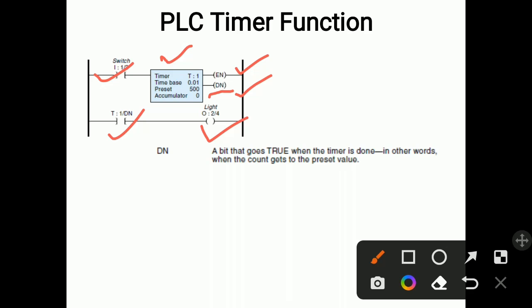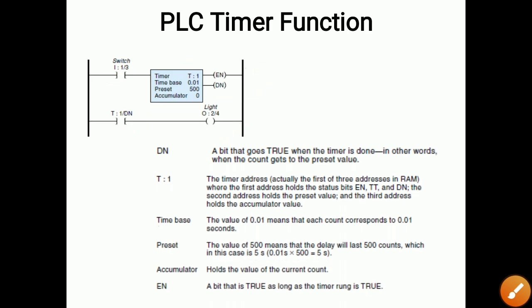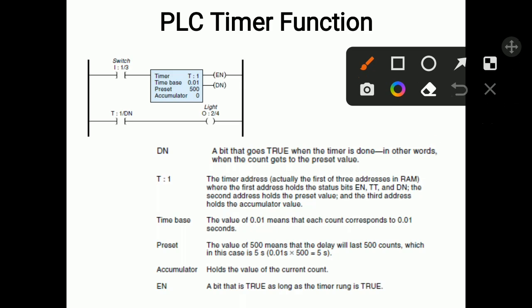DN is a bit that goes true when the timer is done — in other words when the count gets to the preset value. Suppose the preset value is 500; when the count is completely done, DN gets activated. When the preset value is completed, DN gets on.